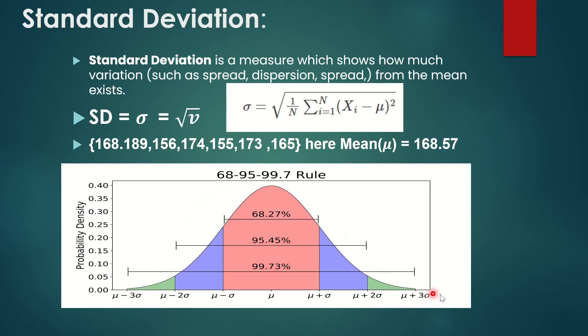In a Gaussian distribution, there are three rules. The first standard deviation covers 68.27% of data. The second standard deviation covers 95.5% of data points. The third standard deviation covers 99.7% of data. I will explain this in the Gaussian distribution video.